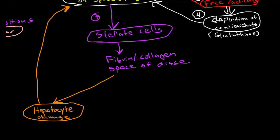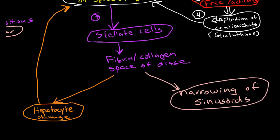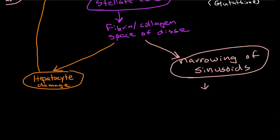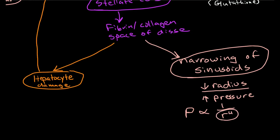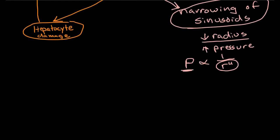Now, the other thing is we have narrowing of the sinusoids. Now, if you narrow enough sinusoids, what happens when you narrow the sinusoids? Well, remember Poiseuille's law, if we have a reduction in radius, what effects does that have? Well, it's going to have a significant increase on pressure. Because pressure is inversely related to the radius to the fourth power. So even relatively small decreases in radius can have significant increases in pressure.